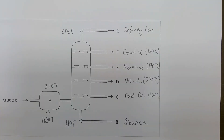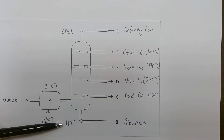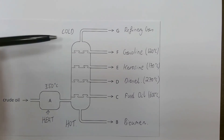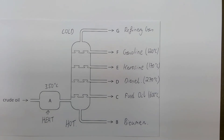The crude oil is heated at the bottom of the tower to around 350 degrees Celsius, turning it into a gas. This mixture of gases then moves up the tower. The tower is hotter at the bottom than at the top. Parts of the mixture condense when the temperature falls below their boiling point.